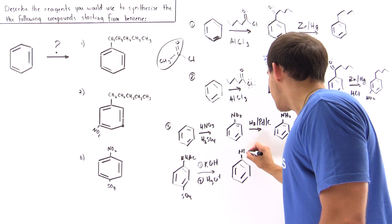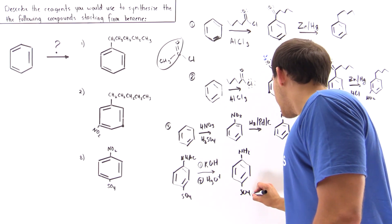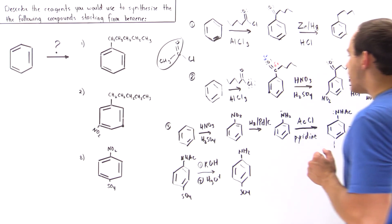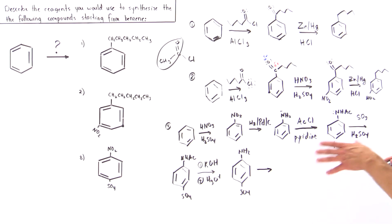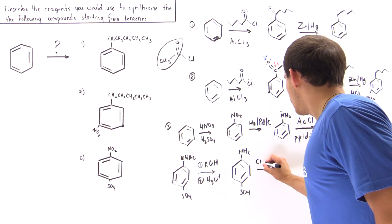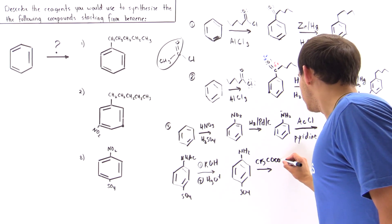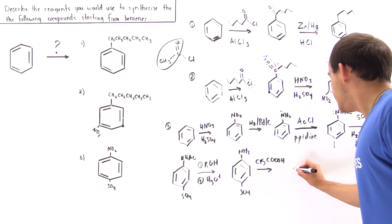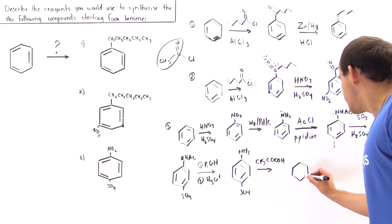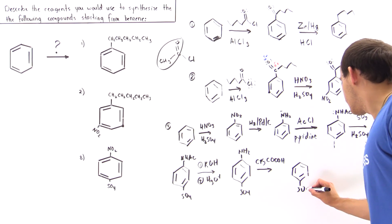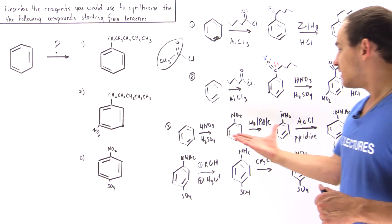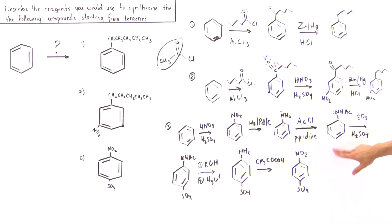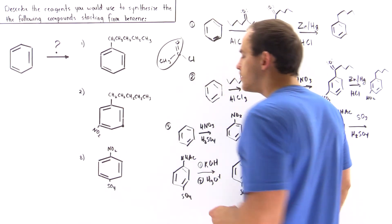Finally, to convert the amine back into our nitro group, we have to oxidize it — reducing goes from NO2 to NH2, and oxidizing goes the other way. We use an oxidizing reagent to oxidize the amine back to the NO2 group via a mechanism we won't detail here, and we form the final product.